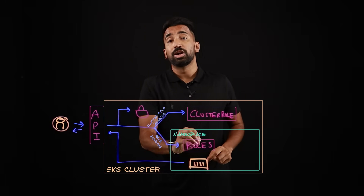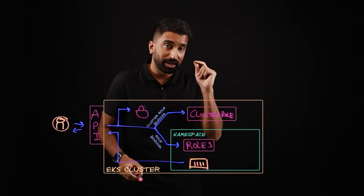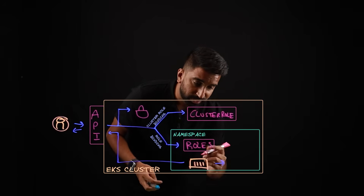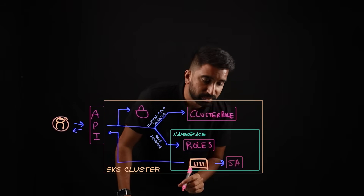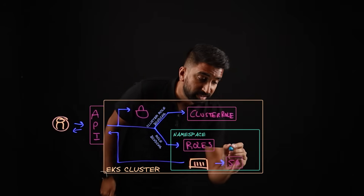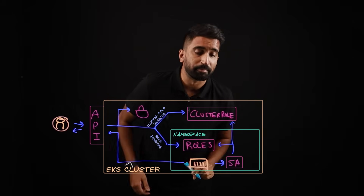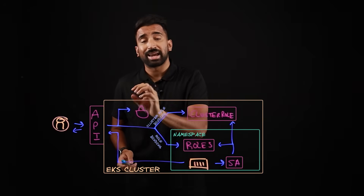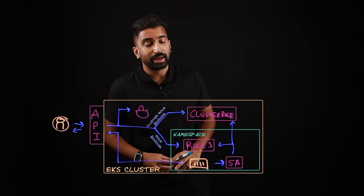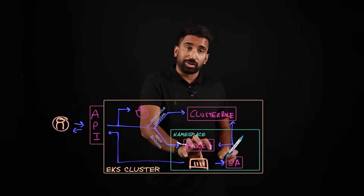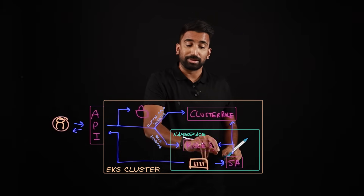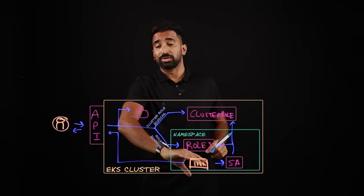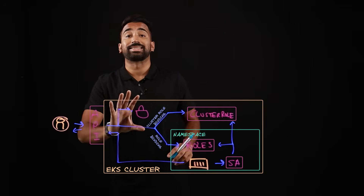But what about when workloads within Kubernetes want to access the Kubernetes API? Here's where service accounts come in. Within our cluster, within this namespace, we'll have a service account — which I'll mark as SA. These service accounts can be bound to roles and cluster roles as well. These bindings are done using cluster role bindings and role bindings for both service accounts and users. So now that the pod references the service account, which is bound to these roles, it has the permissions defined in those roles and can access the Kubernetes API.